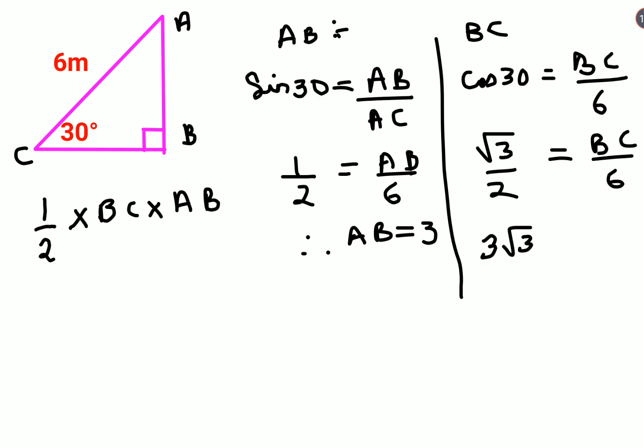Now very easily, let's put all these values in the formula, which is 1/2 times BC, which is 3√3, times 3, which is the value of AB. Therefore, 9√3/2 square meters is the answer for the area of this triangle.